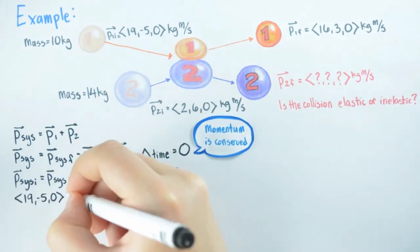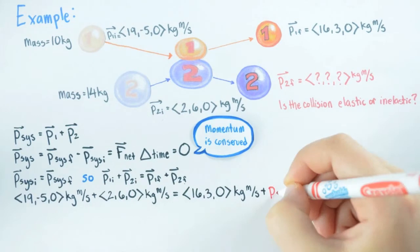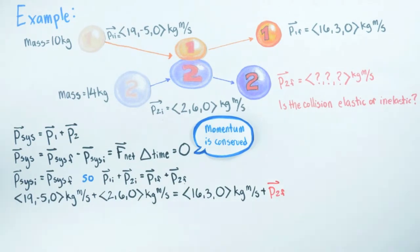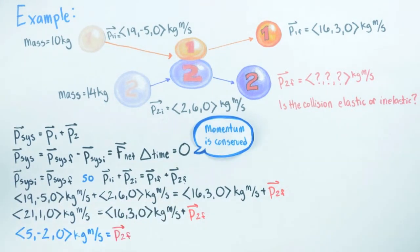Now we see we know everything here except for the final momentum of object 2, P2F. So let's solve for that and plug in the numerical values and we obtain the final momentum of object 2, which is what we want to find.